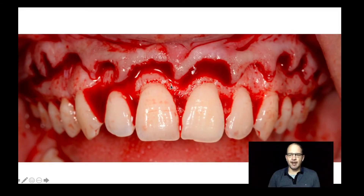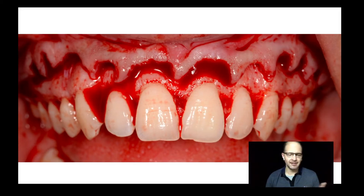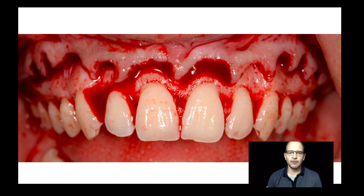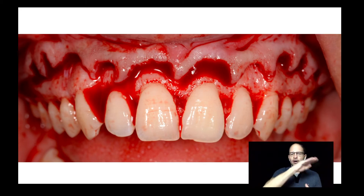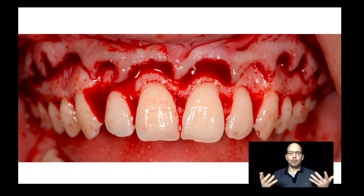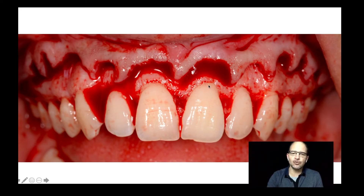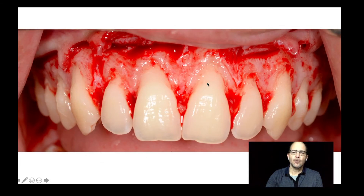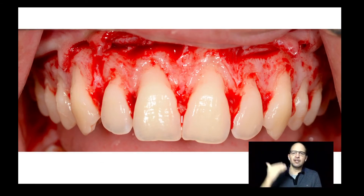Now you raise this flap. I'm against gingivectomy. I'm against flapless crown lengthening — I need to see this bone. So once I finish my outline of your gingival — the outline — I'll open it. And usually the bone in those cases is really close to the CEJ. So what I do is I remove the bone to give it a new biological width.